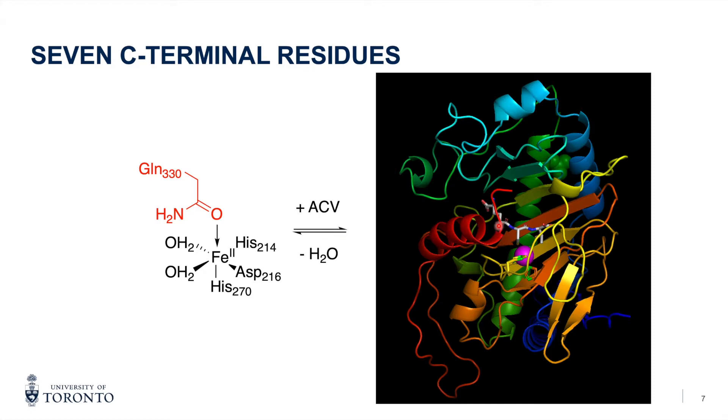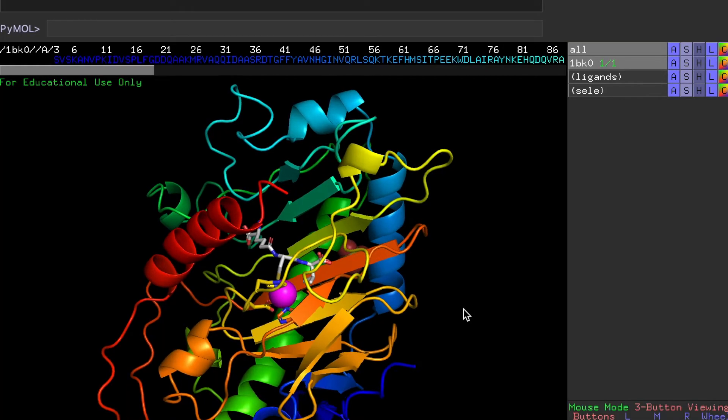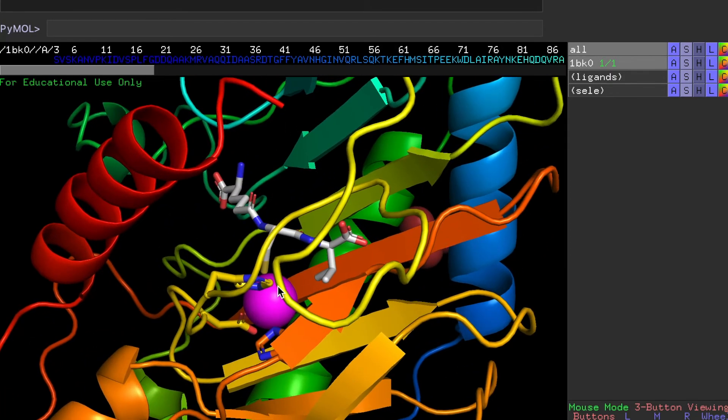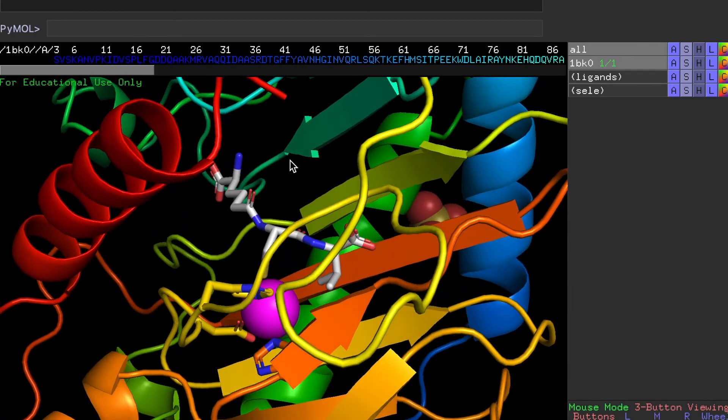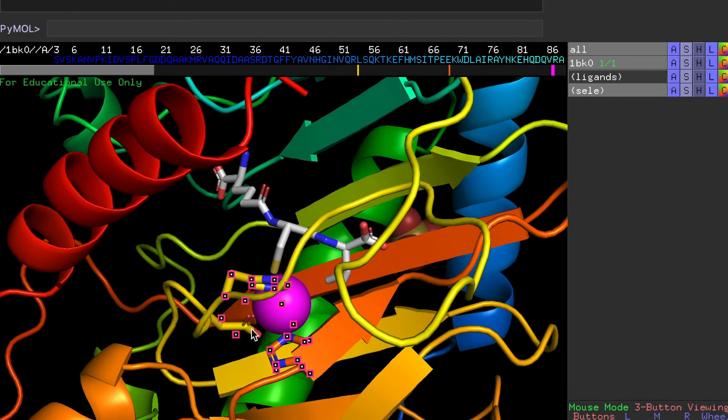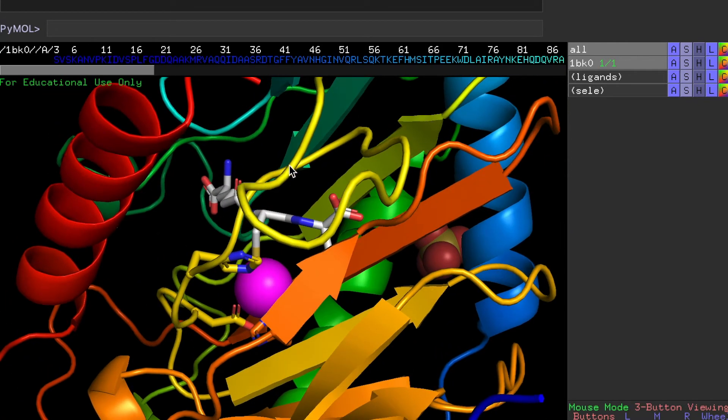But when you delete the C-terminal residues, it will expose the active site, which leads to the formation of a new thioaldehyde oxidation product. And here I just wanted to show my PyMol screen for the IPNS enzyme. So here's the entire enzyme, and you can zoom in to the active site, which has the iron atom. And then it's two histidine and then one aspartate facial triad.